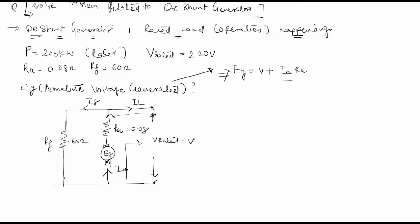The load current IL is found from the rated power divided by the rated voltage: IL equals 200 times 10 to the power 3 divided by 220, which equals 909.09 amperes.